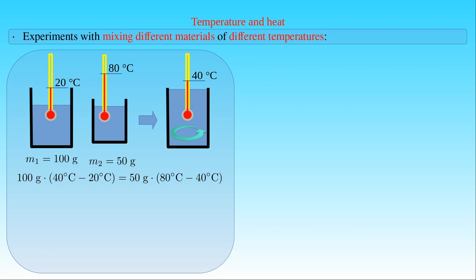We can denote the different quantities in this equation with the following letters: the mass of the cold water is M1, the temperature of the mixture is T3, the temperature of the cold water is T1, the mass of the hot water is M2, the temperature of the hot water is T2, and again, the temperature of the mixture is T3. As a result, we obtain the equation stating that M1 times (T3 minus T1) is equal to M2 times (T2 minus T3).